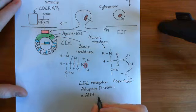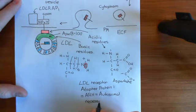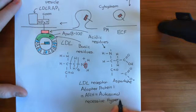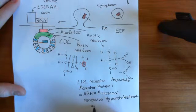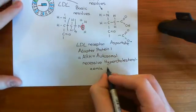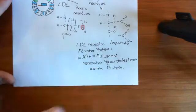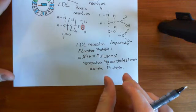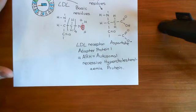ARH stands for the autosomal recessive hypercholesterolemia protein — A for autosomal, R for recessive, and H for hypercholesterolemia. The reason it's called that is because there is a condition called autosomal recessive hypercholesterolemia. It was found that if you had this condition, the protein you had a mutation in was this adaptor protein — the LDL receptor adaptor protein 1. This results in the inability to actually endocytose the LDL molecules, so you end up with far too much LDL within your blood, because cells just cannot take it up since the LDL receptor adaptor protein 1 is not functional.